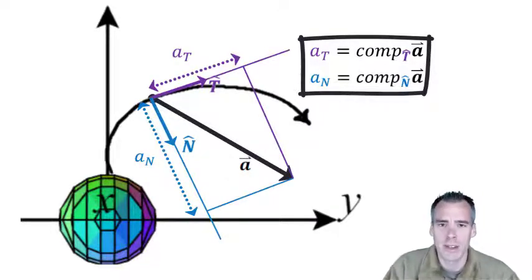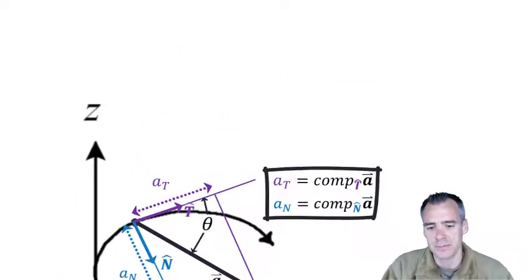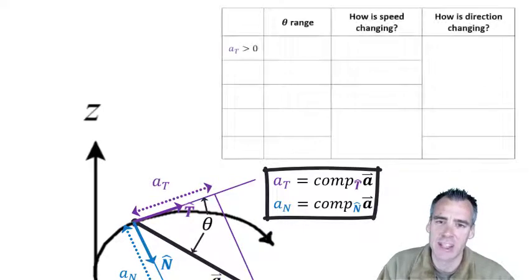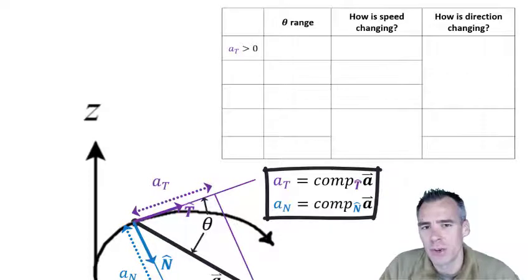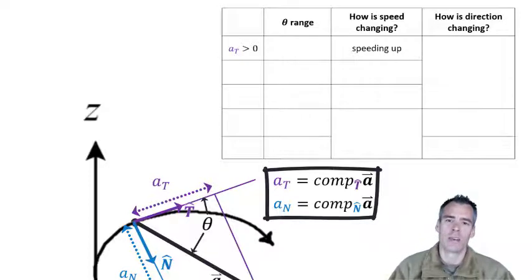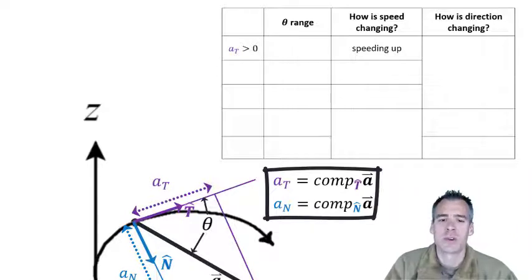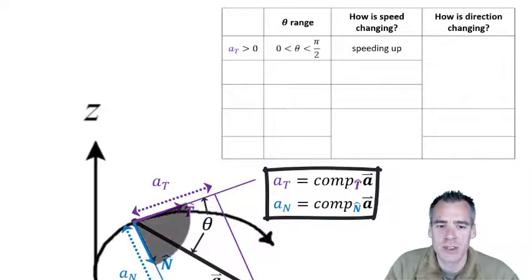Before moving on, let's define theta as the angle between the tangent and acceleration vectors. If a_T is greater than zero, the object is speeding up — just like when the rocket was accelerating upward. From the geometry, this corresponds to theta being between zero and pi over two, giving a positive tangential component of acceleration.